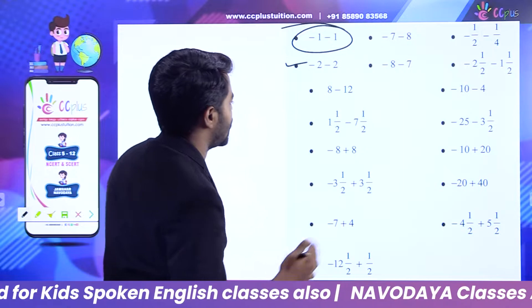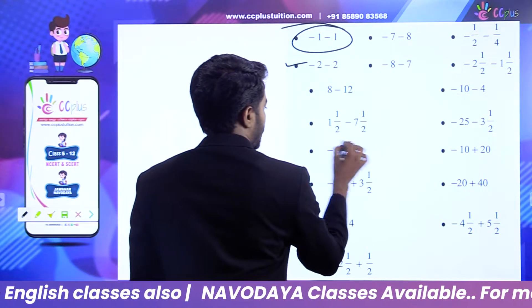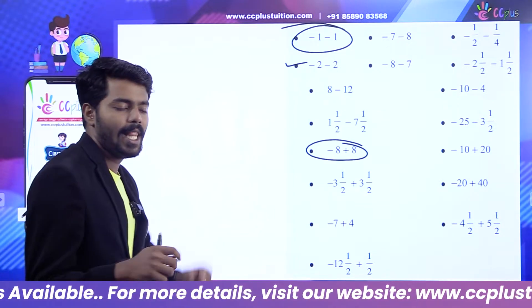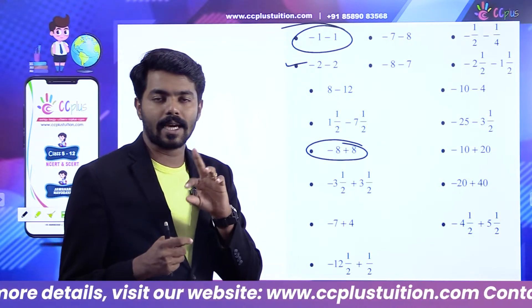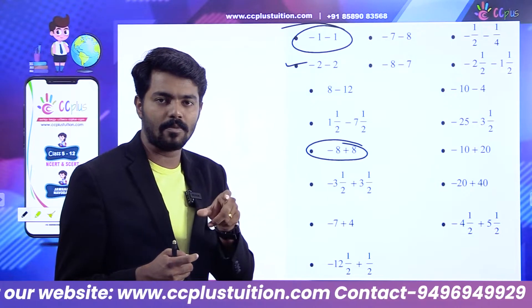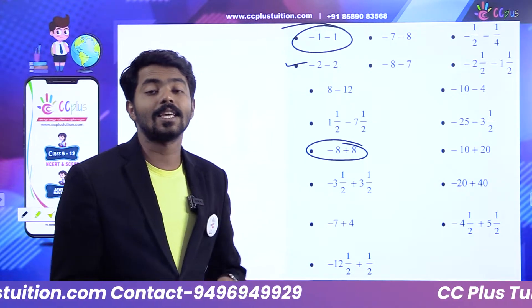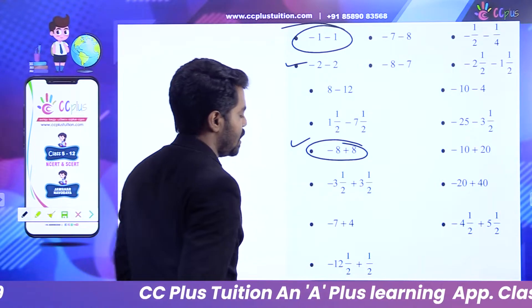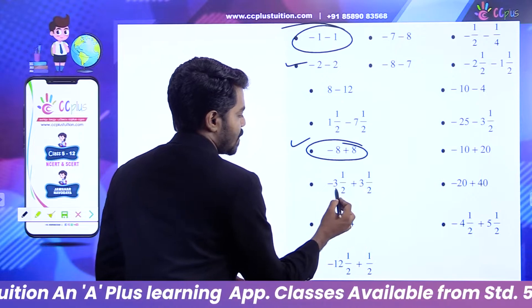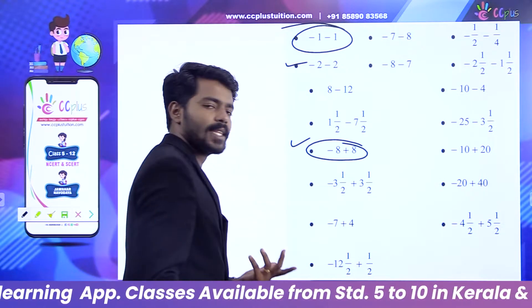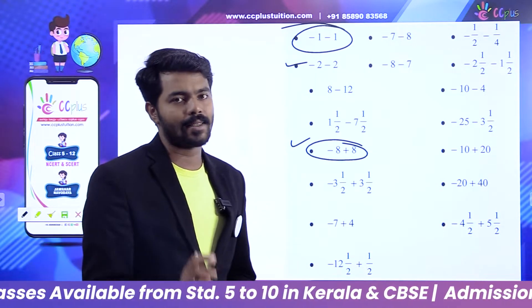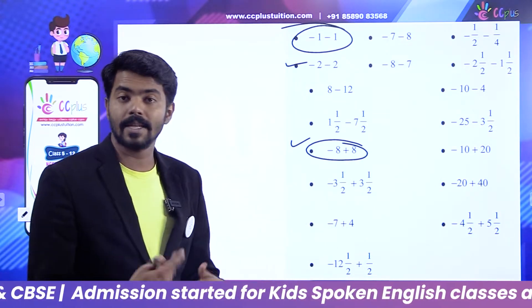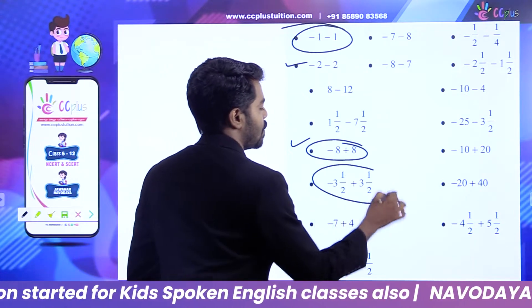Now let's look at this: minus 8 plus 8. Minus 8 plus 8 is 0. Minus 10 plus 10 is 0. Now, minus 3.5 plus 3.5 — how do we do that? That is also 0.